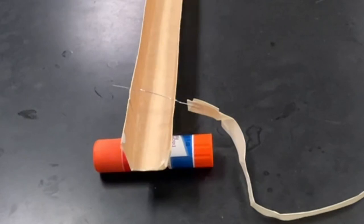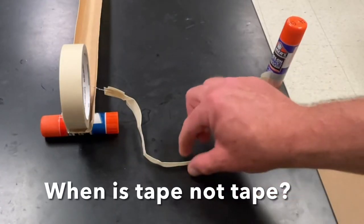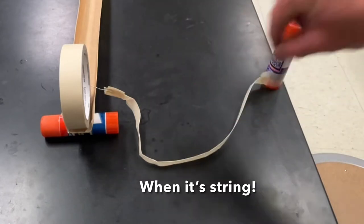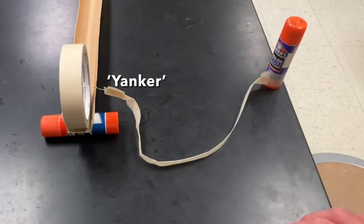Set up my new roller, and I didn't have any string, so I just took some tape and I folded it in half longways, and now it is an anchor and a yanker. What's gonna happen?